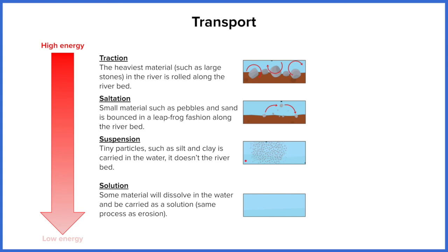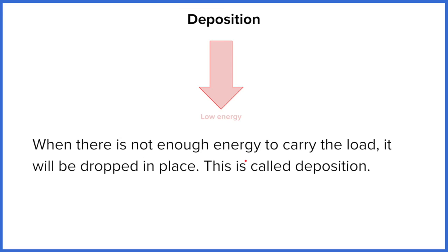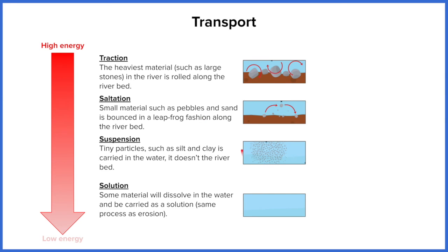And then we've got one more process to look at and this is deposition. Deposition is when a river drops what it's carrying. This happens across the entire long profile of the river. It happens across the entire length of the coast. It happens in transportation, for example where it's carrying these big boulders and rocks by rolling along the river.